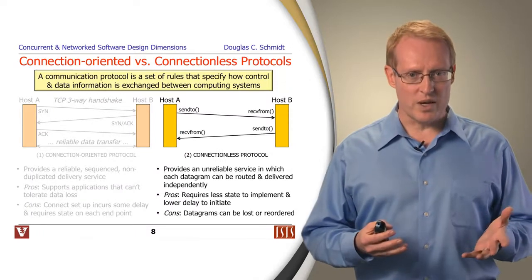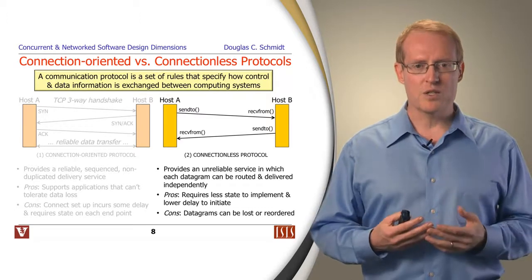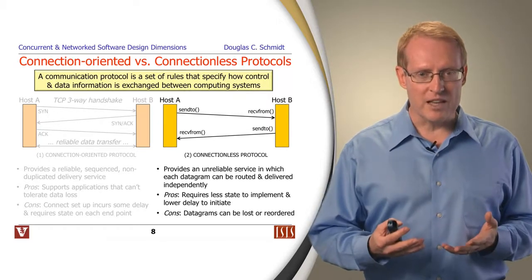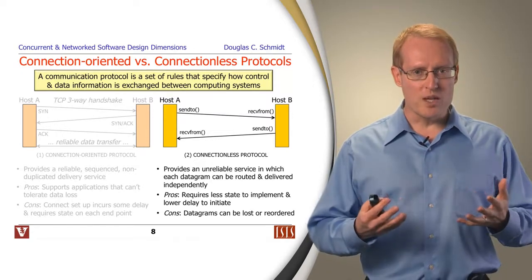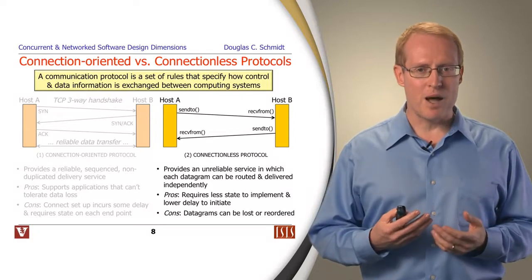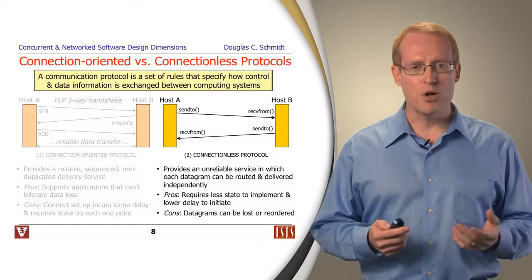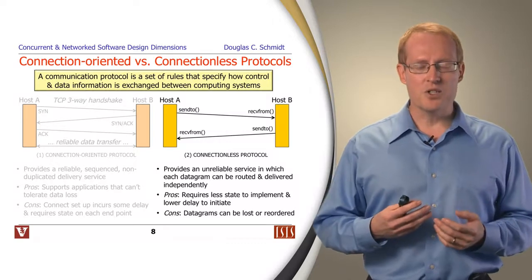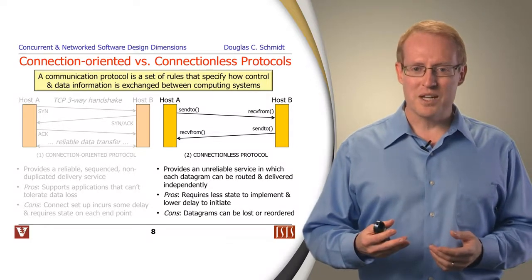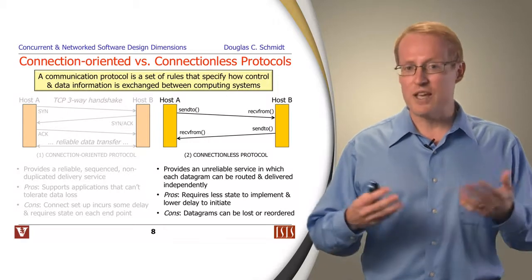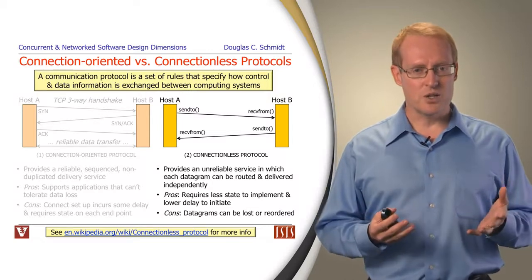The alternative design choice are called connectionless protocols. In these environments, they provide an unreliable delivery service where datagrams can be routed and delivered independently of each other. A good example of something that works this way is the user datagram protocol, or UDP, where you can call send to and receive from operations to send and receive the datagrams between different endpoints. The nice thing about using connectionless protocols is that they take less state to set up, and they also have lower delay to initiate because there's no handshaking that takes place before the data begins to flow. The downside is that these datagrams can be lost or reordered, so they give you best effort service, but that's about it.